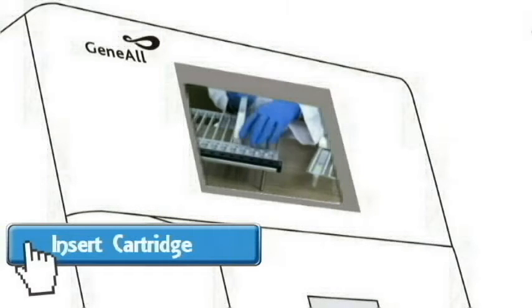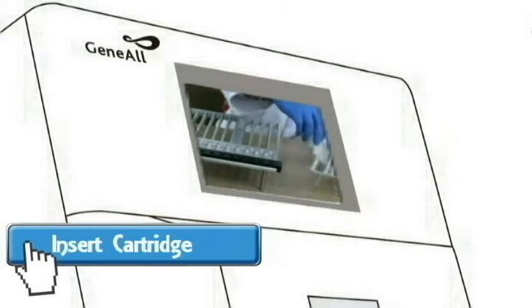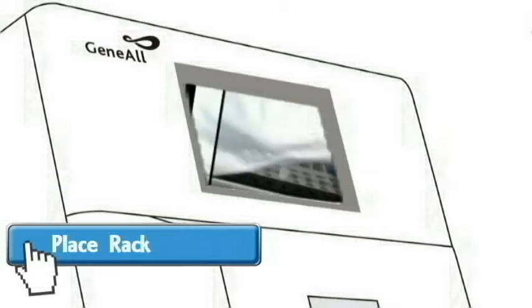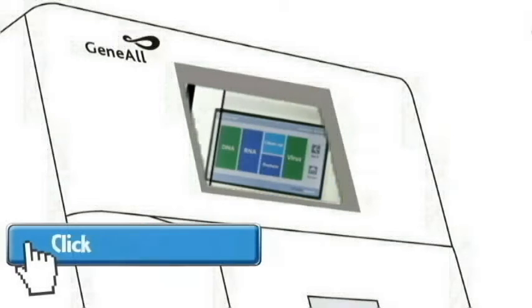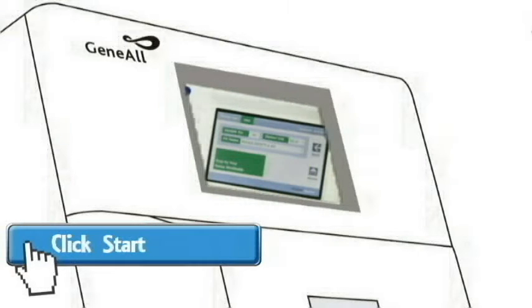Next, remove the cartridge from its package and load onto the rack. After placing all the components, place the rack back inside. Finally, choose from the list of pre-installed setup and press run.